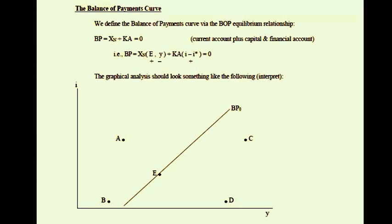Holding the exchange rate E relatively constant, we ask how the balance of payments can remain in equilibrium in the panel of I against Y. If I increases, the capital account improves, so to keep the balance of payments at zero, the current account needs to worsen. This manifests as higher income or output — higher income means more imports, ceteris paribus, deteriorating net exports. This gives a positive correlation between domestic interest rates and domestic income along the BP curve.